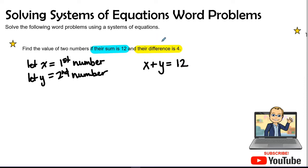And their difference means subtraction. So sum means addition. Difference means subtraction. So X minus Y will equal four.